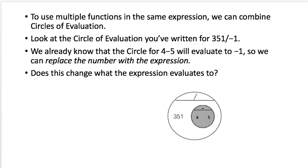One great thing about circles of evaluation is we can combine them for more complicated expressions. Earlier you drew a circle for 351 divided by negative one, and we saw that four minus five evaluates to negative one. So for a more complicated example, we can place the smaller circle (four minus five) inside the bigger circle (divided by 351), replacing the negative one. That doesn't change anything — wherever we have negative one, we can substitute that inner circle.